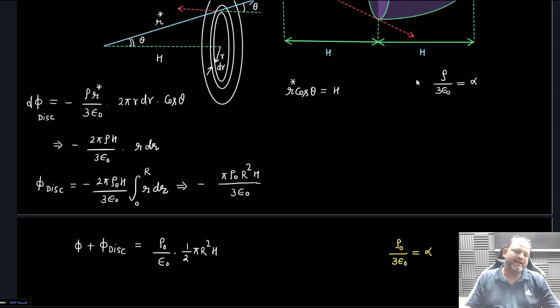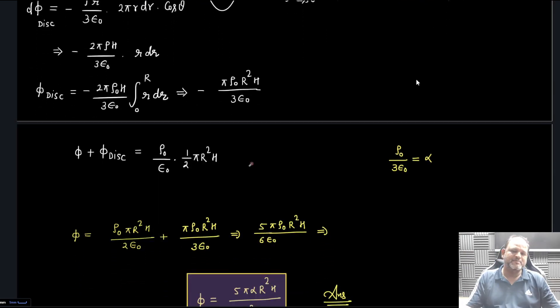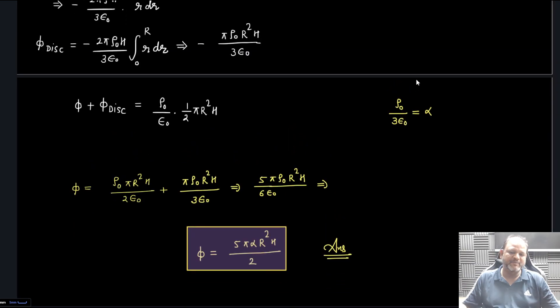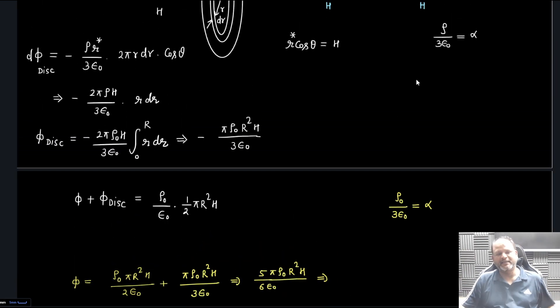Now I can write φ + φ_disk = ρ times volume of the paraboloid by ε₀. I hope it is clear. Let's substitute the value of φ_disk and simplify - we get the same answer again. So your approach can be anything and this is slightly lengthy method.